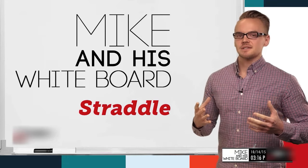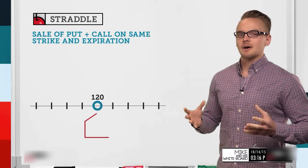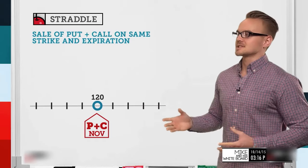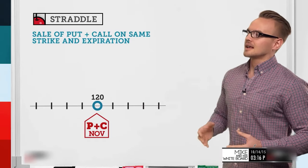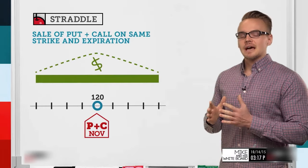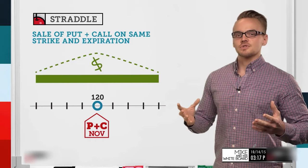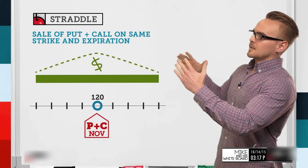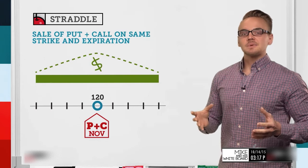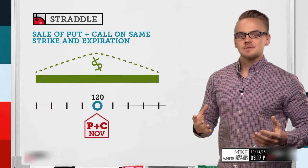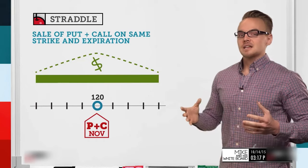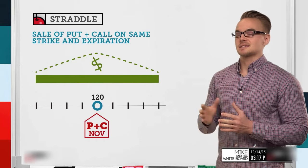It's one of the best undefined risk strategies that we like to use. When we look at the first slide, we're going to break down how a straddle is profitable. Looking at this graph, we've got a 120 strike, and below the strike bar we have a put and a call in the November expiration. Above that you can see we have a range of profitability. This is defined as a neutral strategy — the dotted line is highest when we're at the money.